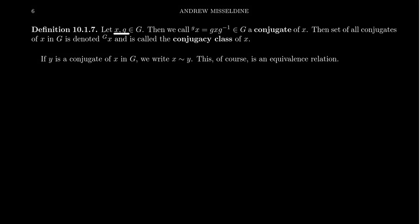Let x and g be elements inside of a group G. We're going to denote the element little g as a superscript on the left of x, and that's going to be defined to be g x g-inverse.